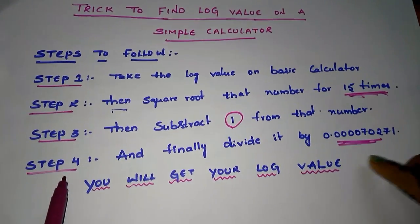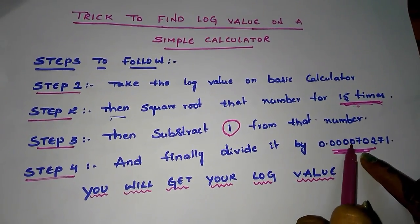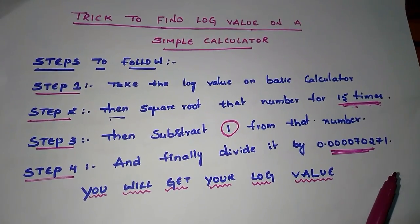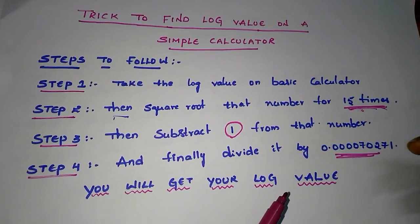Step number 4, finally divide it by this number: 0.000070271. There is no particular scientific reason, it is just a method for finding the log values.